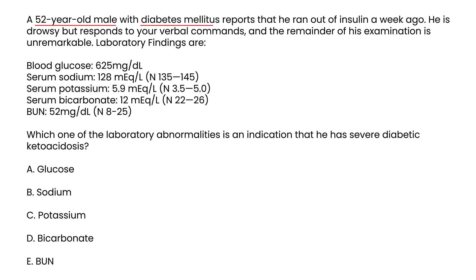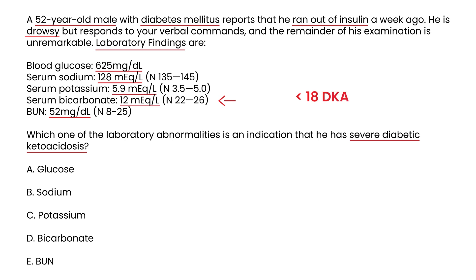Vignette 1: A 52-year-old male with diabetes mellitus ran out of insulin a week ago. He is drowsy but responds to verbal commands. Lab findings show blood glucose 625, serum sodium 128, serum potassium 5.9, serum bicarb 12, BUN 52. Which lab abnormality indicates severe DKA? The severity of DKA is determined by the bicarb level — it will be less than 18 in DKA, and the lower it is, the more severe. The answer is the serum bicarb of 12.